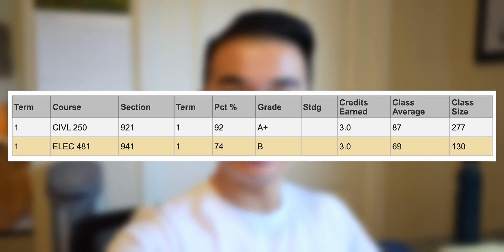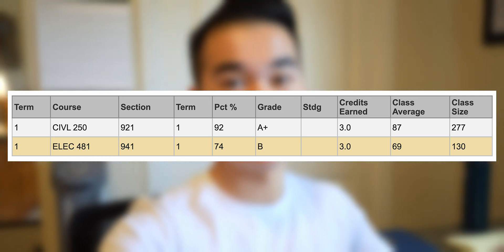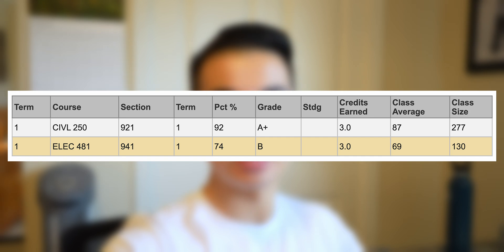When I was recording the A-roll for this video, my ELEC481 grades had not come out yet, but literally a day after I recorded it, they came out. I received a 74% in ELEC481 and the class average was 69%, which was a lot higher than I expected considering our final exam average and the assignment averages as well.